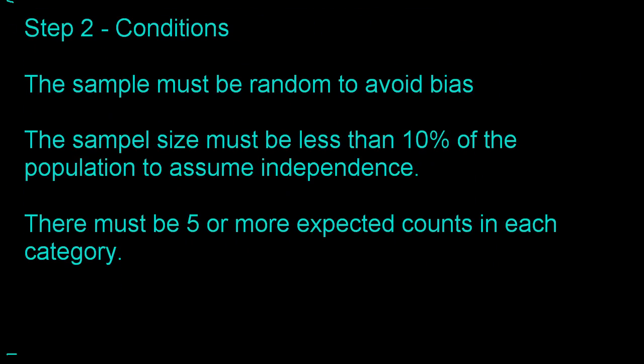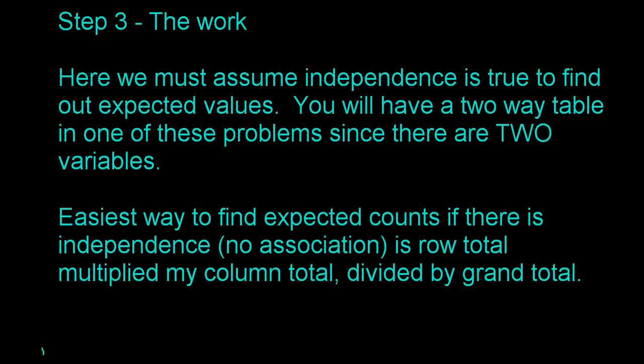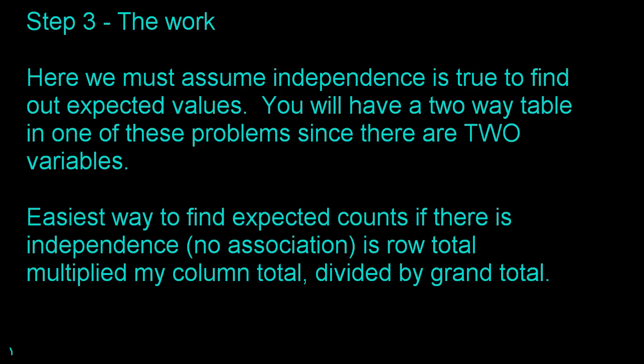Step two is the conditions. These are the same three conditions from the goodness of fit test. The sample must be random to avoid bias. The sample size must be less than 10% of the population to assume independence. And there must be five or more expected counts in each category. In step three, the work involves finding those expected counts. To find them, you take the row total, multiply by the column total, divided by the grand total.